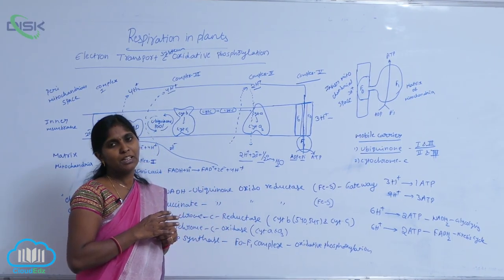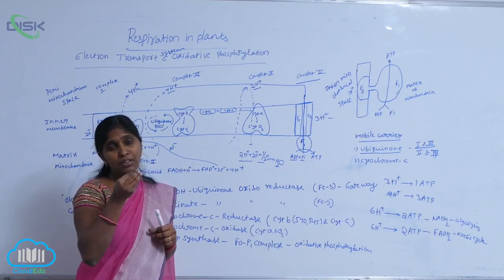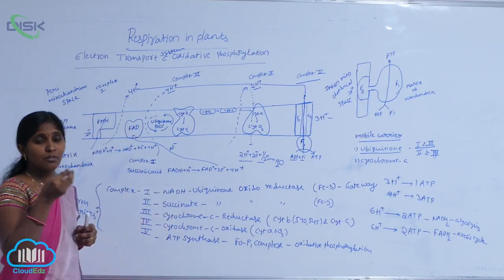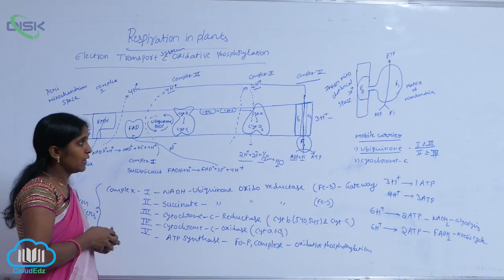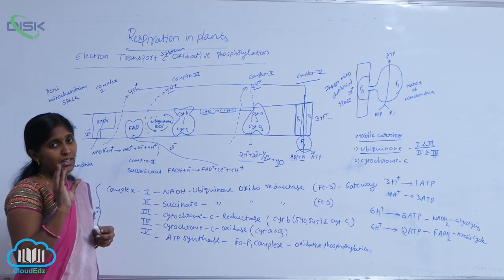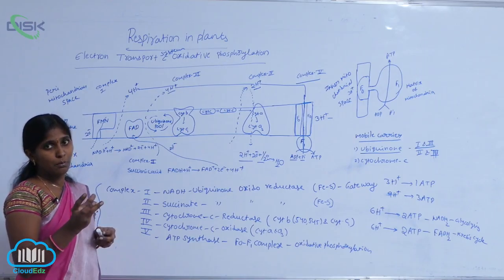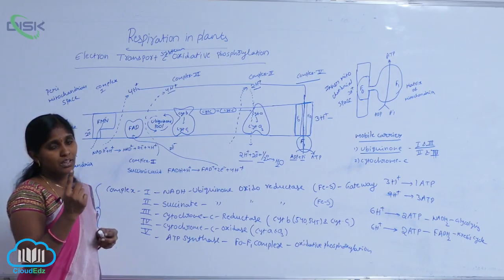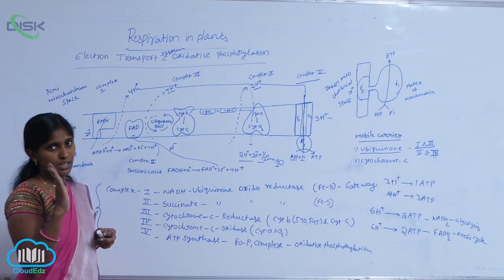When H+ protons fall onto the F1 granules, there is production of rotational energy that leads to ATP formation. For three protons, one ATP molecule is released.